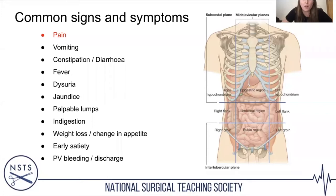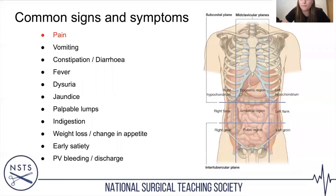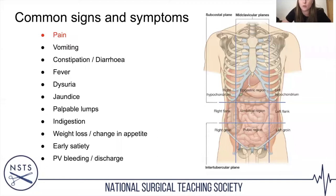Fever gives a good idea of whether there's an infective cause. Don't forget other systems — dysuria, jaundice (yellowing of the skin or eyes), lumps and bumps, systemic symptoms like indigestion, weight loss, change in appetite, and early satiety — the feeling of being full when eating only small amounts. Don't forget gynaecological symptoms too: any PV bleeding or discharge.